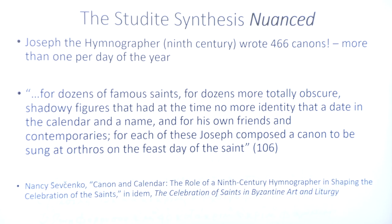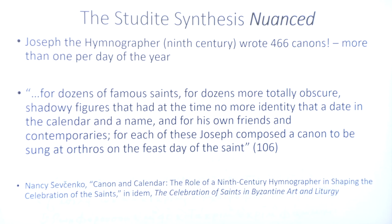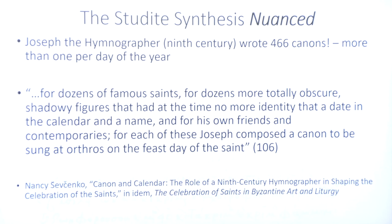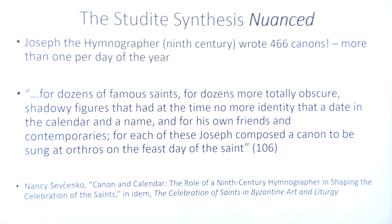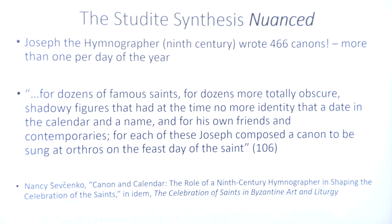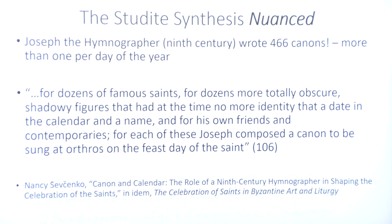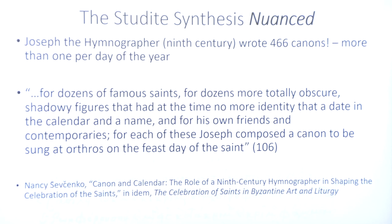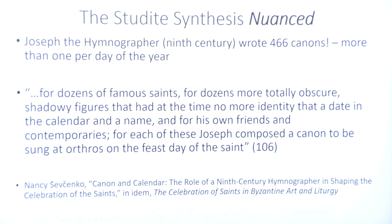An example of the frenzy of composition that took place right after iconoclasm is Joseph the Hymnographer, who wrote 466 canons — if you divide it by the 365 days of the year, oftentimes more than one canon per day. Nancy Shevchenko notes that for dozens of famous saints, for dozens more totally obscure shadowy figures that had at the time no more identity than a date in the calendar and a name, and for his own friends and contemporaries — for each of these, Joseph composed a canon to be sung at Orthros on the feast day of the saint. The amount of canons composed is reflected by the fact that many didn't actually make it into the liturgical books, and that's why many are still waiting to be discovered and edited.